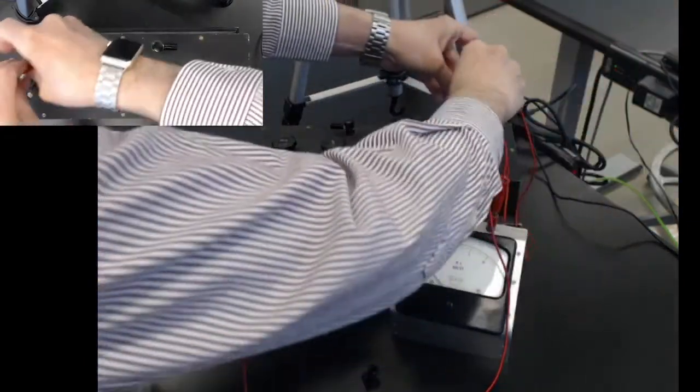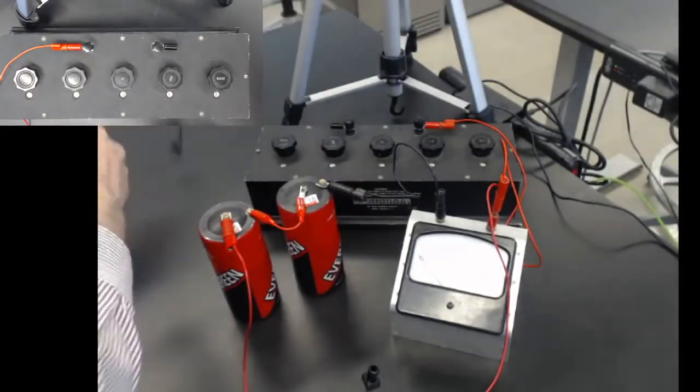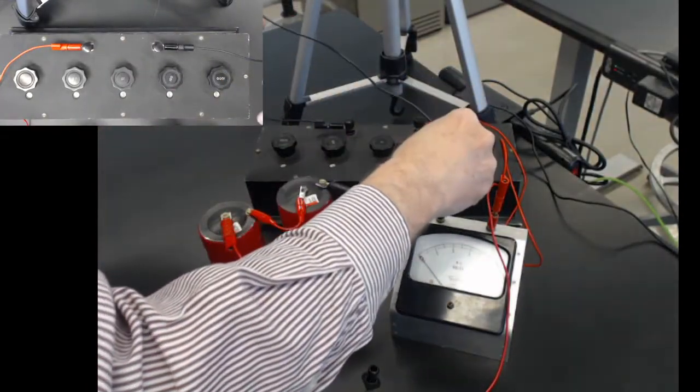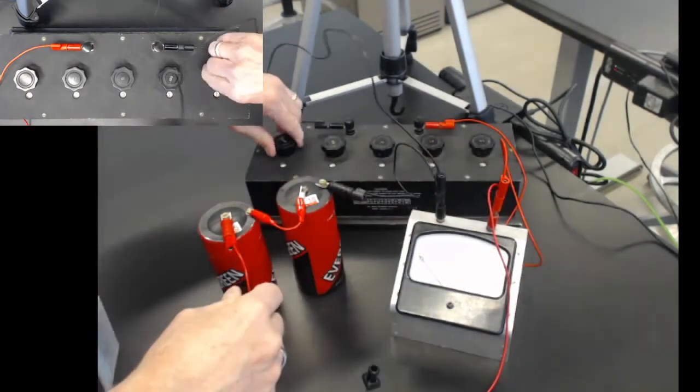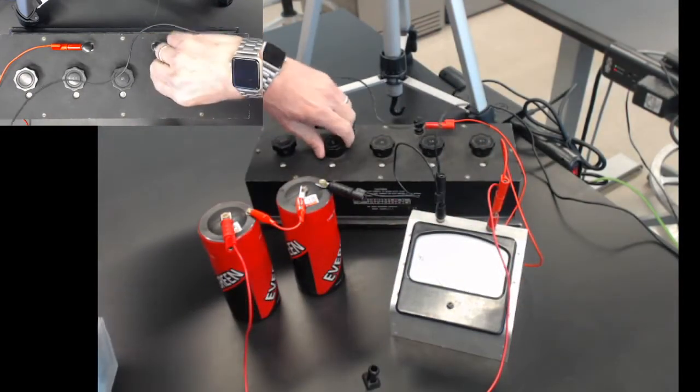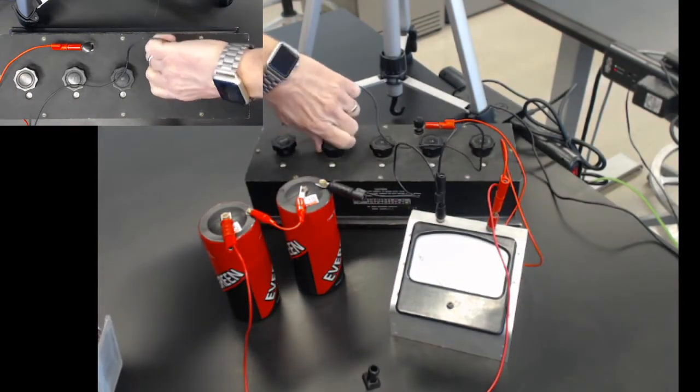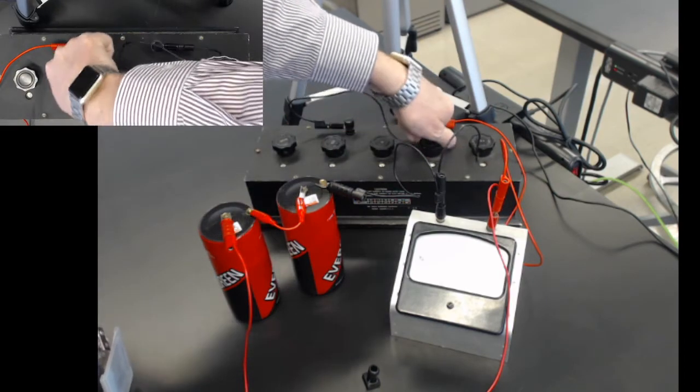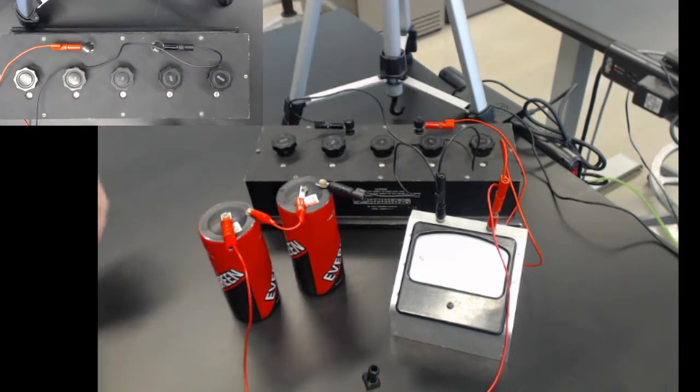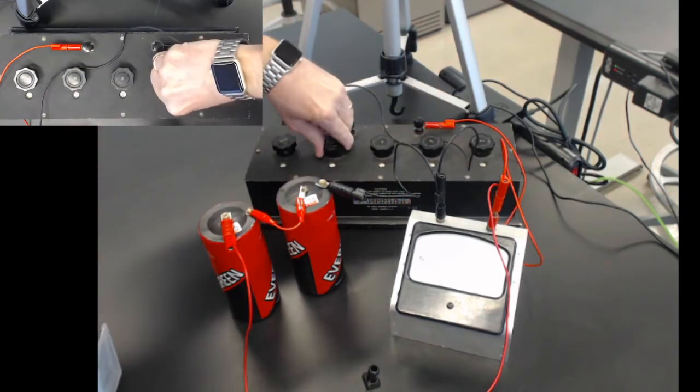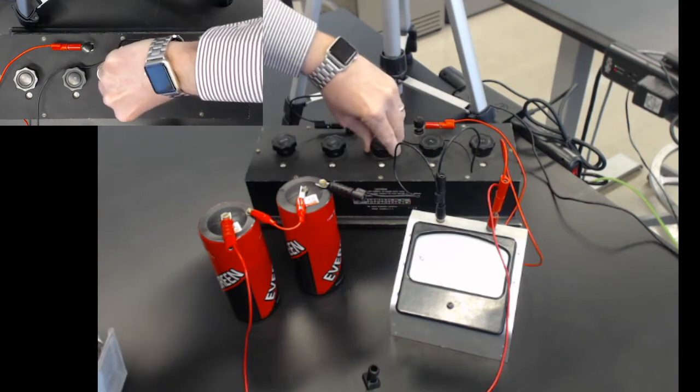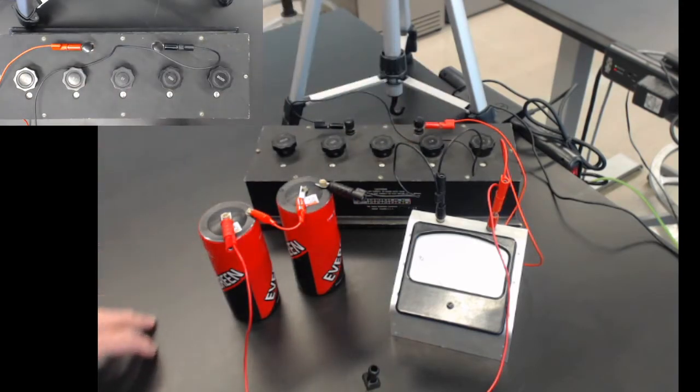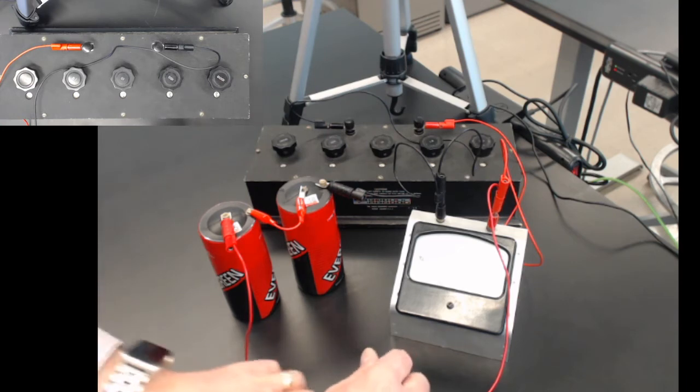The decade box resistance goes up to something high—never let it go to zero. Actually, the instructions say to go to the highest possible. Let's do that first: 9,999 ohms.